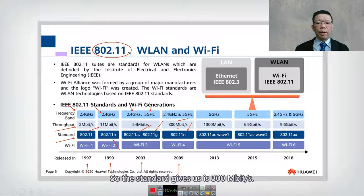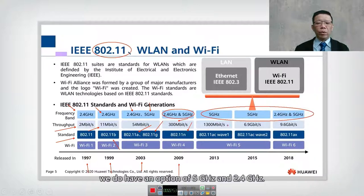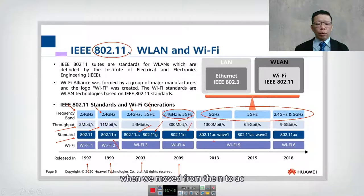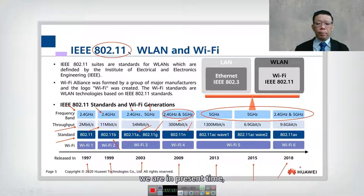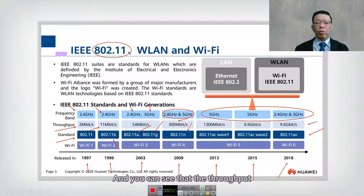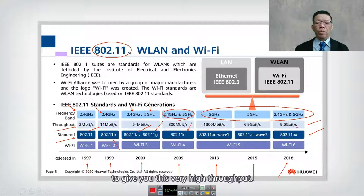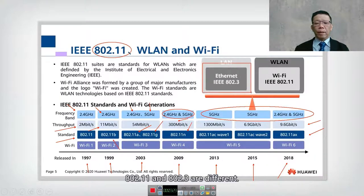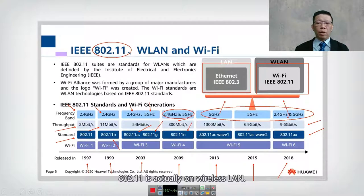In 2009, 802.11n provided 300 megabits per second supporting both 2.4 and 5 gigahertz. Moving to 802.11ac — with AC Wave 1 in 2013, AC Wave 2 in 2015, and continuing to 2020 — throughput has increased tremendously by combining both frequency bands. Note that 802.11 is wireless LAN, while 802.3 is wired LAN — they are different standards.